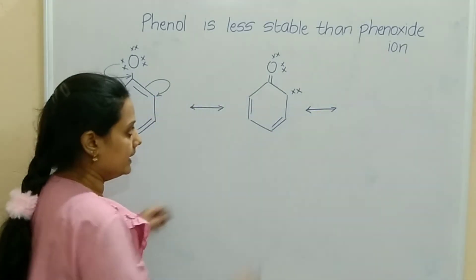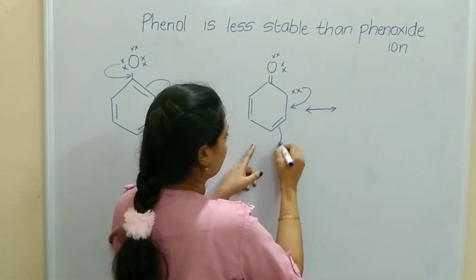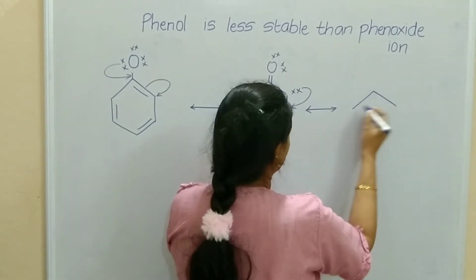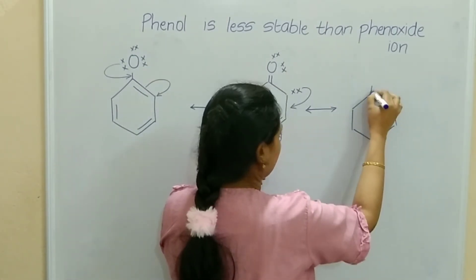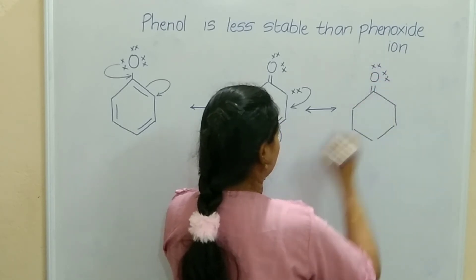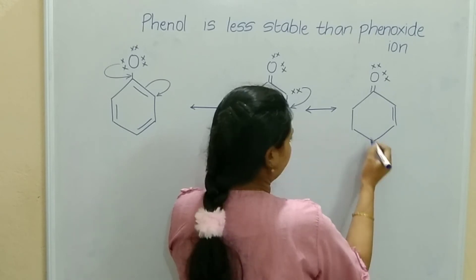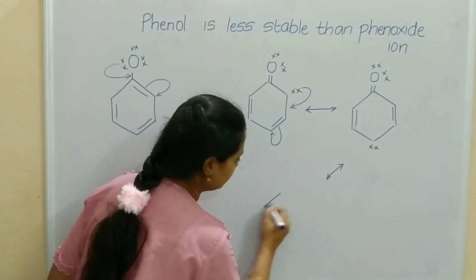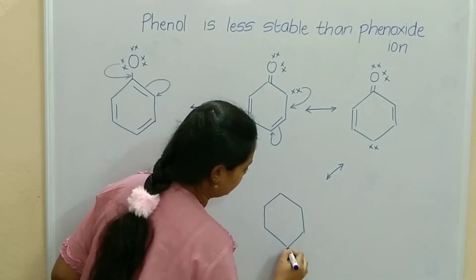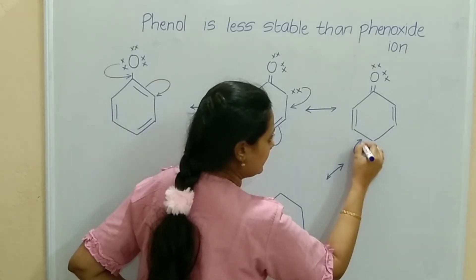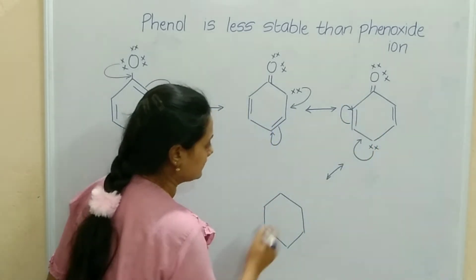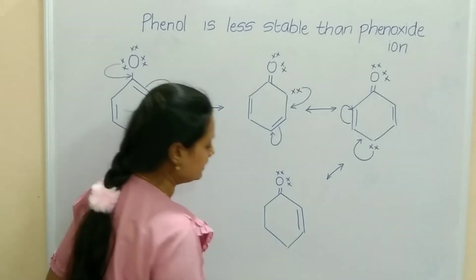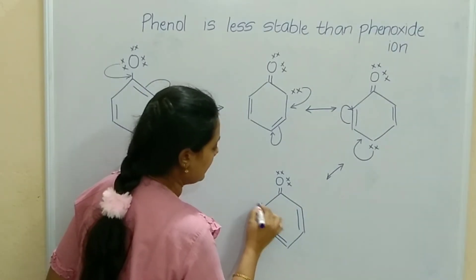The next resonating structure: the electrons will come to the side and the bond will form electrons onto the corner. Benzene ring, double bond, oxygen with two lone pairs of electrons, here one bond, here electron, this bond as it is. The next resonating structure: electron will come to the side and the bond will form as electrons — here as it is, this bond, this bond, and one electron pair.